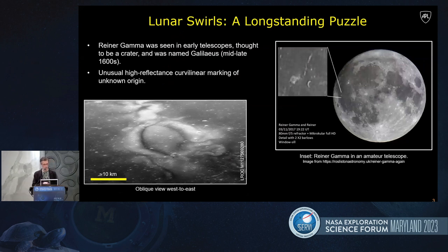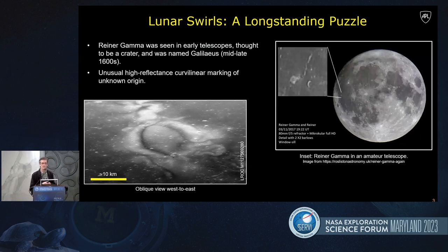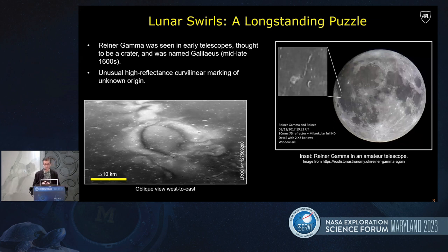Reiner Gamma is the type example of a lunar swirl. It was seen in early telescopic images hundreds of years ago and has been a puzzle ever since. Lunar swirls are these unusual high-reflectance curvilinear markings of unknown origin, although there are a number of hypotheses for what formed them.